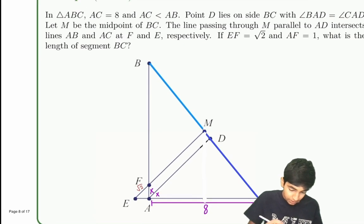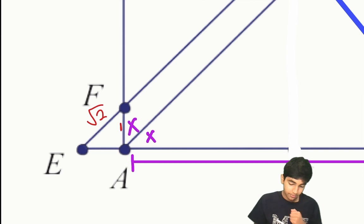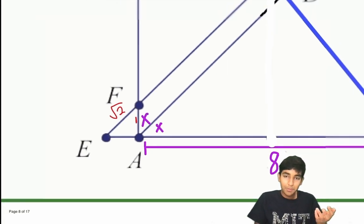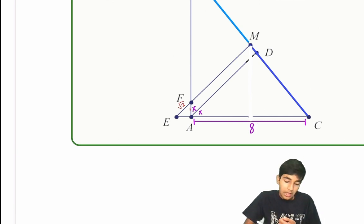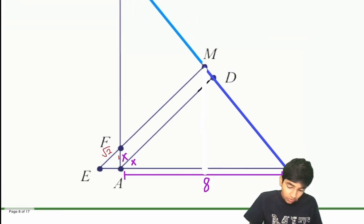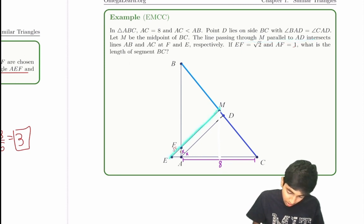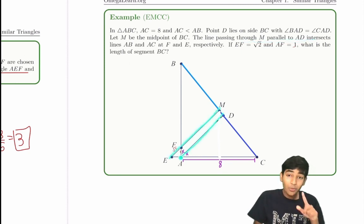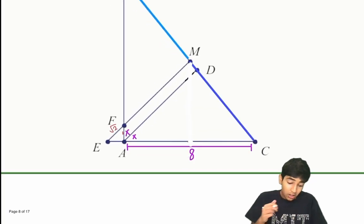And AF is 1 — this segment over here is 1. Now, this reminds me of 45-45-90 triangles, but obviously we can't just assume that; we have to see why it's true. We've got this parallel condition — the line through M is parallel to AD — and parallel lines come with a lot of angle conditions and similar triangles, so let's see what those give us.